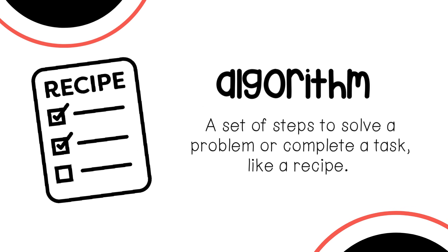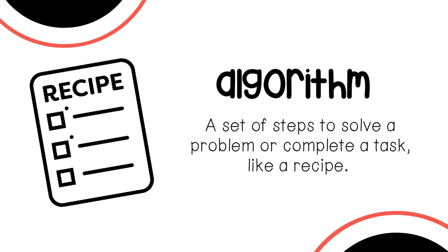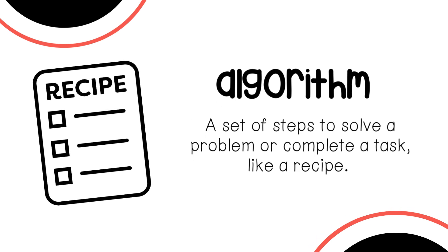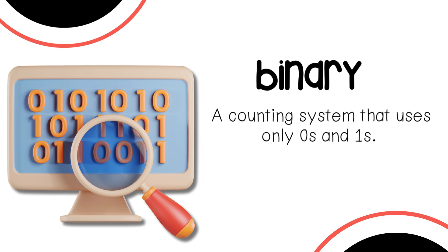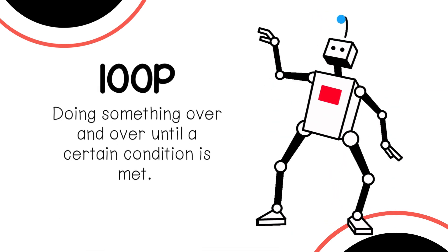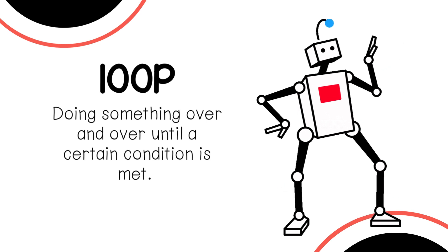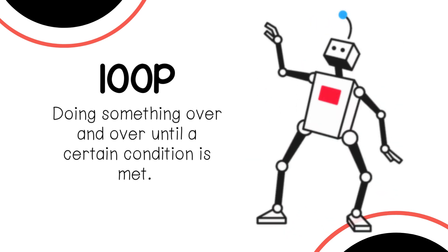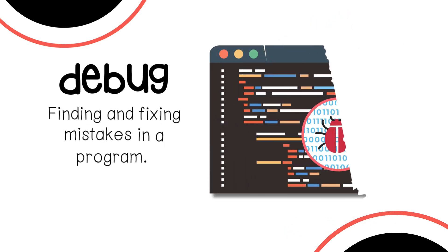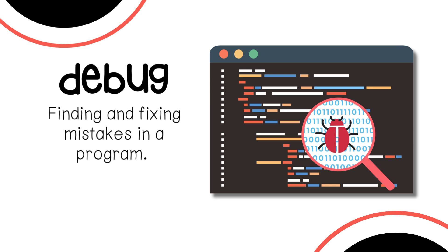An algorithm is a set of steps to solve a problem or complete a task, like in a recipe. Binary is a counting system that uses only zeros and ones. A loop is doing something over and over until a certain condition is met. Debug means finding and fixing mistakes in a program.